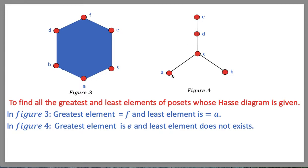In another diagram, the greatest element is e, but there is no least element. The least element is always unique — we cannot have more than one least element. Here the minimal elements are a and b, but this poset does not have a least element.